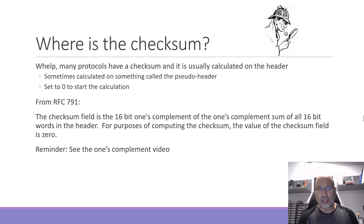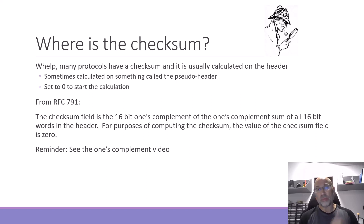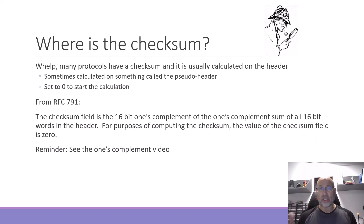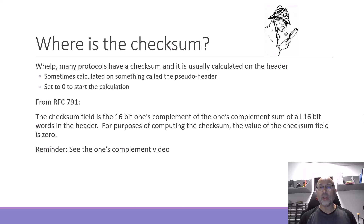Where can you find the checksum? A lot of protocols have a checksum, but our big three that we use today are the Internet Protocol, TCP, and UDP. All of them are going to have a checksum on the header. For IP it's just a calculation on the header. Sometimes the calculation for checksum is also on the pseudo header, which includes a part of the previous packet. In the case of TCP and UDP, they include the pseudo header.